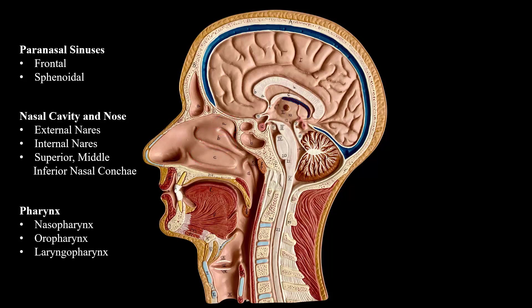We have the pharynx. Pharynx means throat, and it's divided into three parts: the nasopharynx, the oropharynx, and the laryngeal pharynx. The oral pharynx and laryngeal pharynx are also used by the digestive system.